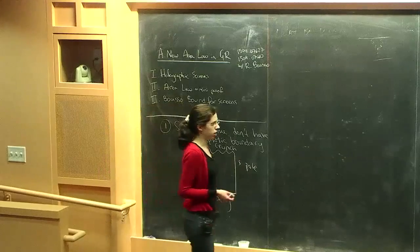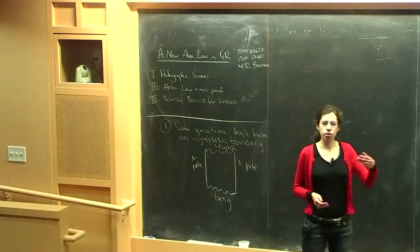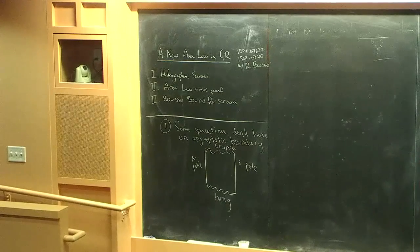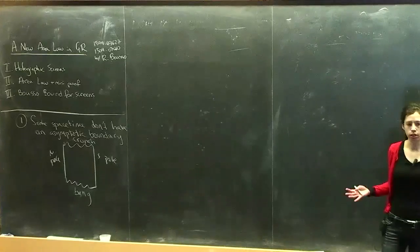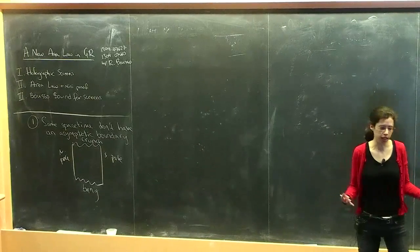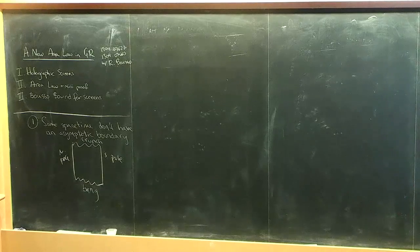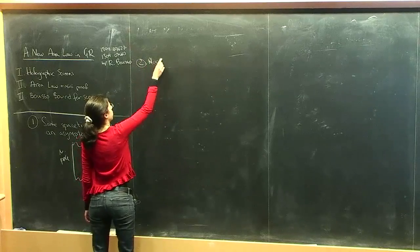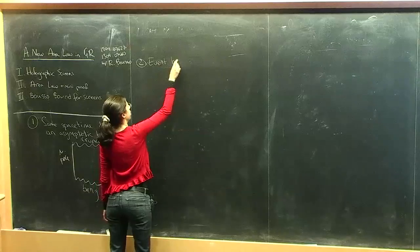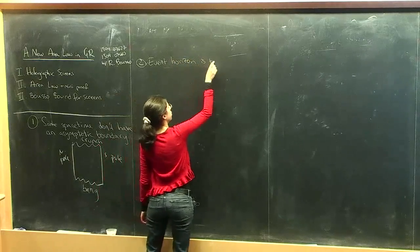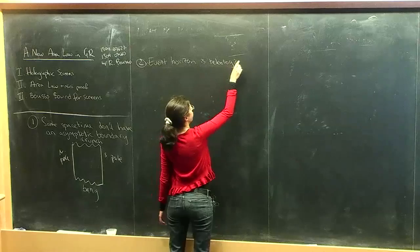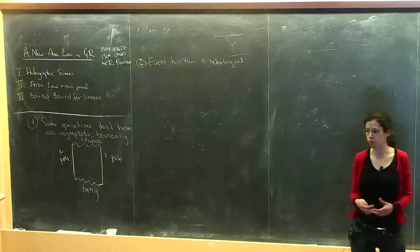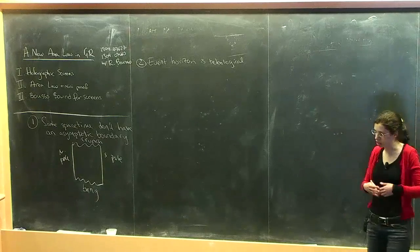Another drawback is related to how we define causal horizons: as the boundary of the past of infinity. That feels somewhat acausal — it's not a local definition in time. The thermodynamics of the black hole now depend on what will happen in the far future. This is the problem that the general event horizon is teleological.